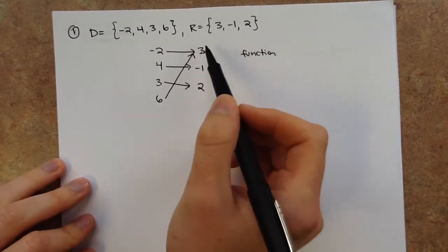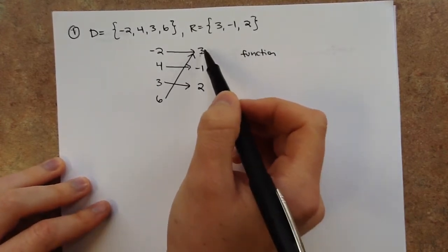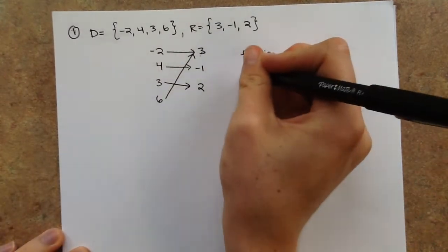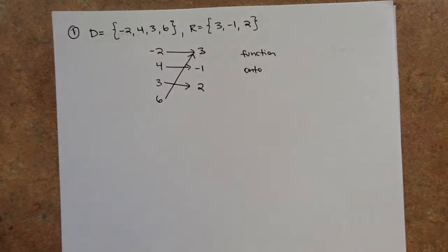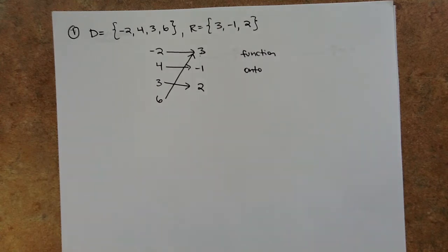Onto means every element in the range gets hit at least once. The 3 gets hit, the negative 1 gets hit, the 2 gets hit — so it is onto. On your test, you'll also have to state whether it's discrete or continuous. This one would be discrete just because it's a finite list of numbers — it's not a continuous function like we've been seeing in the notes.